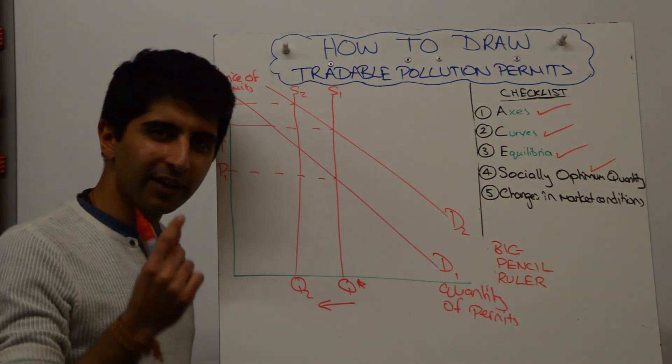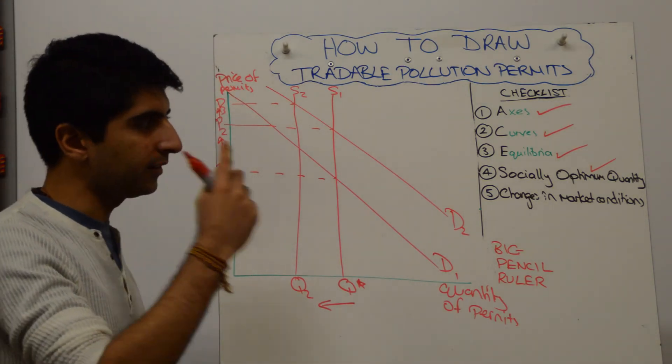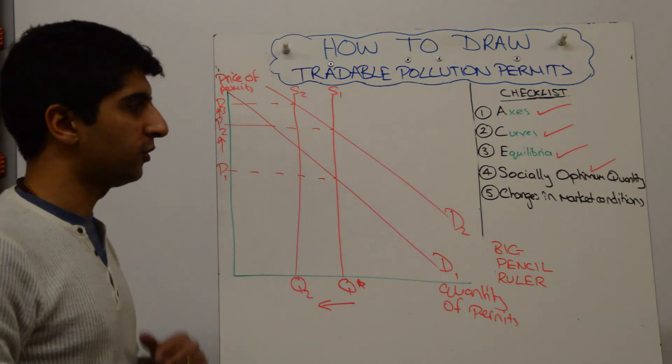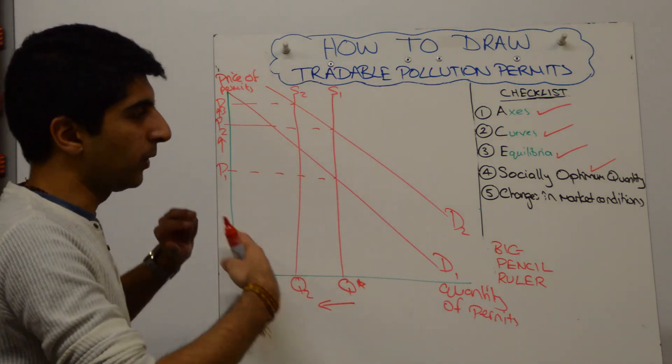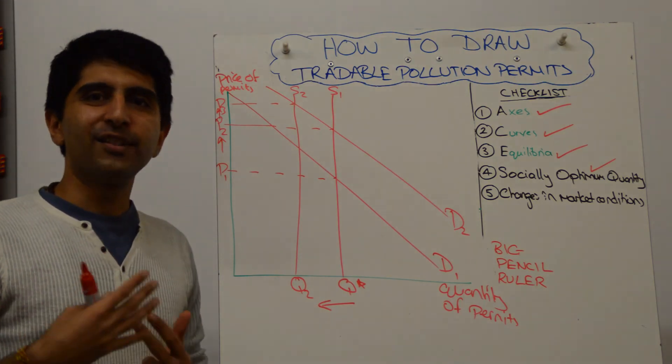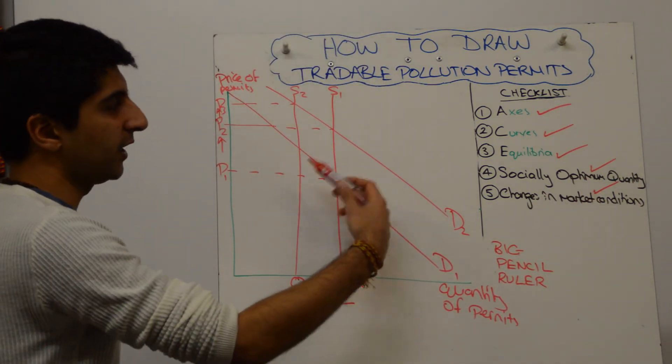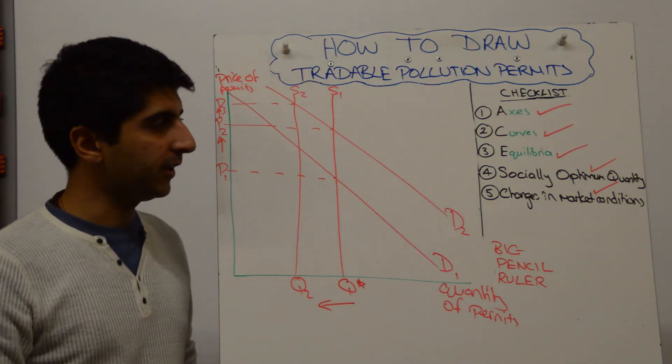To show in your analysis and to show in the diagram that when market conditions change, incentives change, the way in which the market operates changes. So we've done that as well very clearly by shifting our curves, demand curve and supply curve.